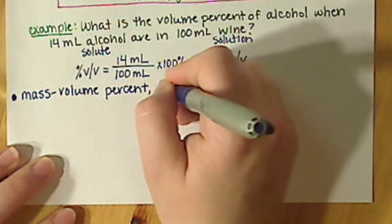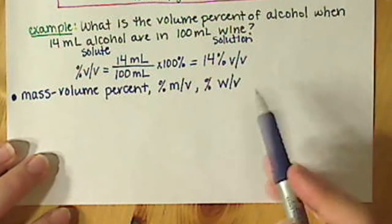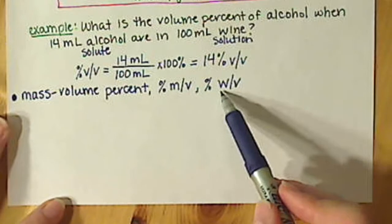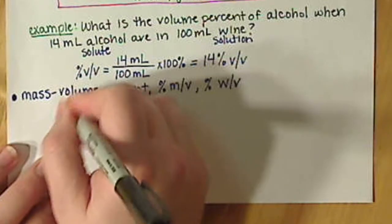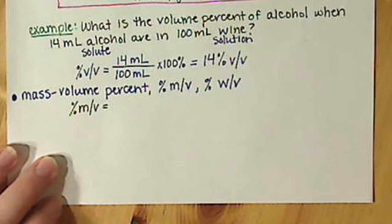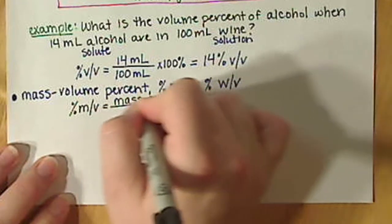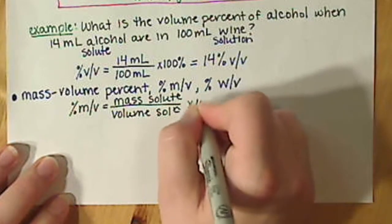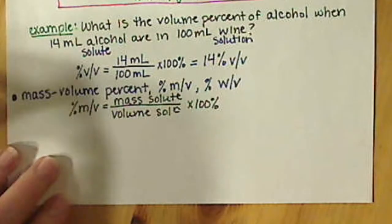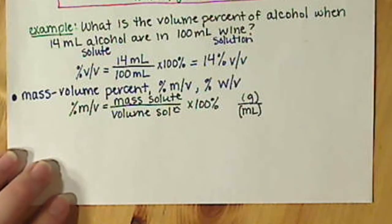This is percent M/V — sometimes incorrectly written as percent W/V. The equation for mass/volume percent is the mass of the solute divided by the volume of the solution, times 100%. Units are grams for mass and milliliters for volume.